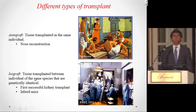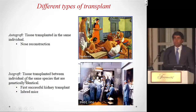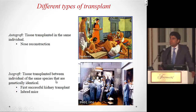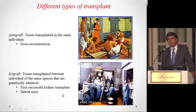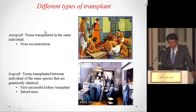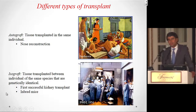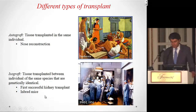The same scenario applies to isografts — tissue transplanted between individuals of the same species that are genetically identical. In humans, those are identical twins. This is the case of the first successful kidney transplant done at the Brigham more than 60 years ago. The immune system of the recipient does not recognize the donor kidney as foreign, and those patients do not need immunosuppressants.